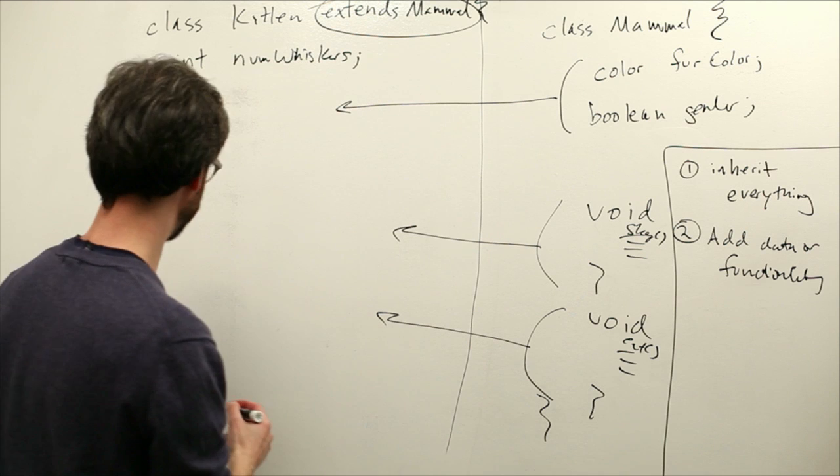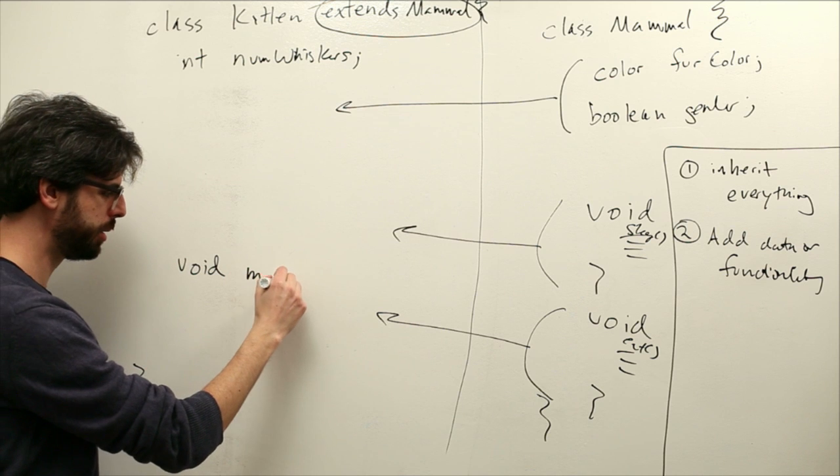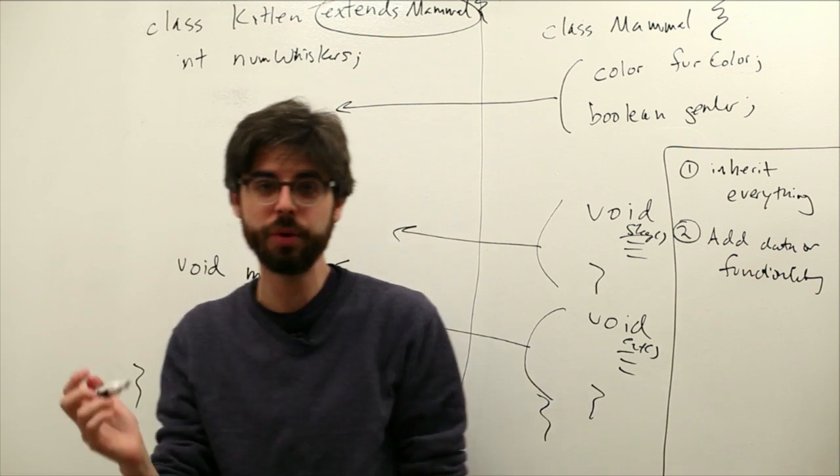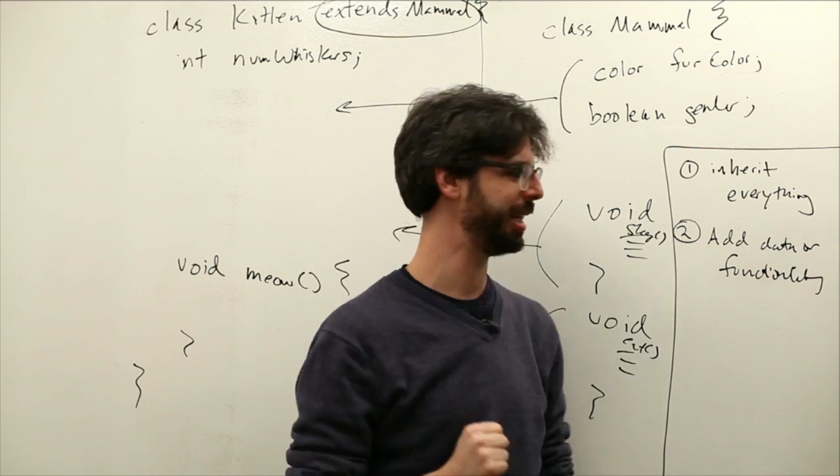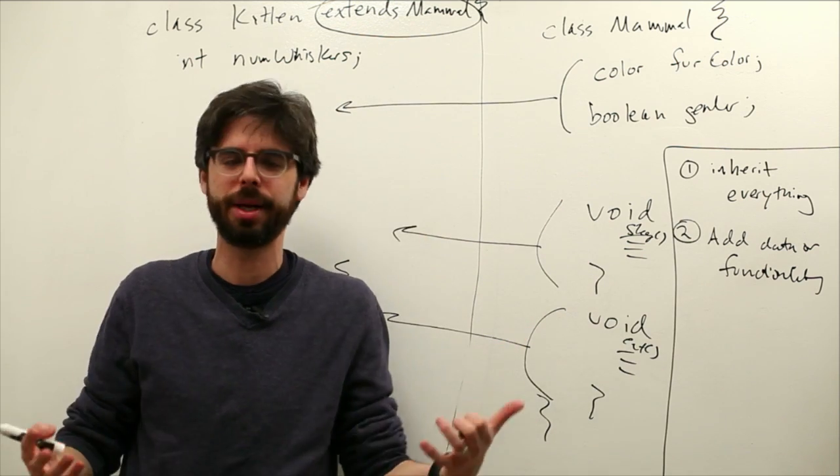We can also add functions. So maybe we might add a function called meow. And meow is something that only kittens do, not all mammals do. So that's a piece of function that we're going to add to the kitten class. So one of the things we can do with inheritance is we can inherit everything and then add to it.